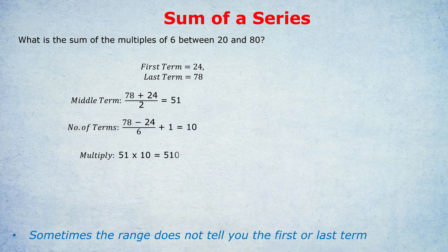Step 3, we multiply. 51 times 10 is 510. This example I chose just to illustrate that sometimes you have to work out the first term and the last term. They won't just hand it to you on a platter.